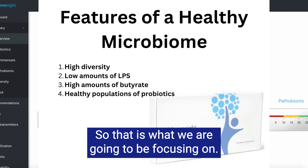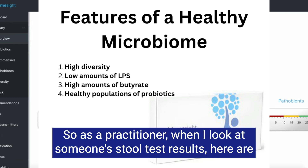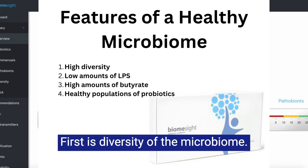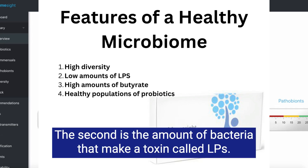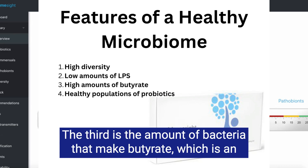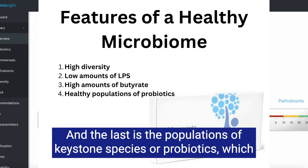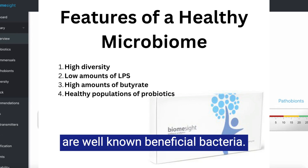As a practitioner, when I look at someone's stool test results, here are the main things I'm looking at. First is diversity of the microbiome. The second is the amount of bacteria that make a toxin called LPS. The third is the amount of bacteria that make butyrate, which is an anti-inflammatory short-chain fatty acid. And the last is the populations of keystone species or probiotics, which are well-known beneficial bacteria.